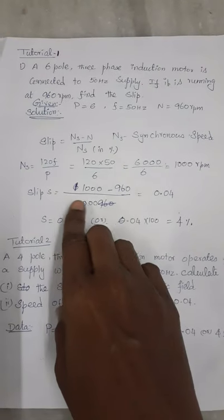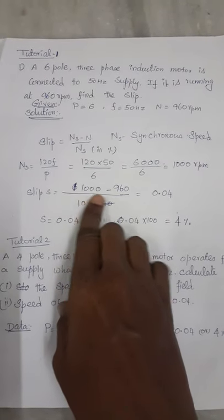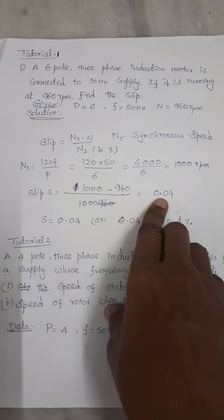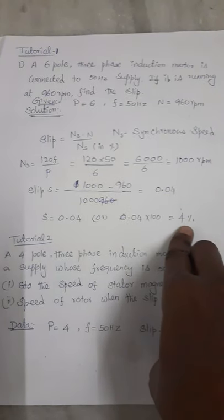And substitute 1000 RPM in slip: 1000 minus 960 actual speed by 1000 gives 0.04, where slip in percentage is equal to 4 percentage.